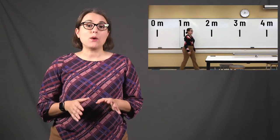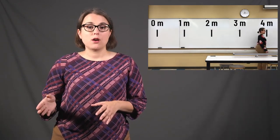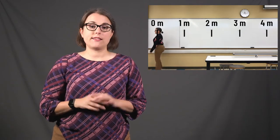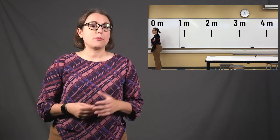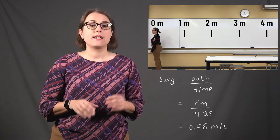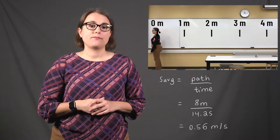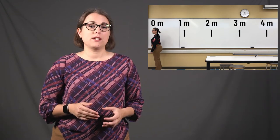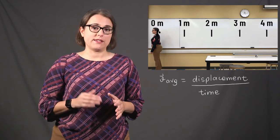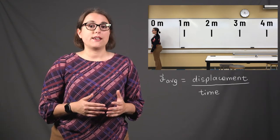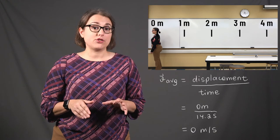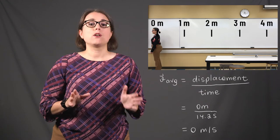Let's reconsider the example where I walk around the physics classroom, starting at the 0 meter mark, walking to the 4 meter mark, and then back to the 0 meter mark. We calculated the path to be 8 meters and the displacement to be 0 meters. The average speed is 8 meters divided by 14.2 seconds, which is 0.56 meters per second. Because I walked at a constant pace the entire time, my instantaneous speed equals my average speed. The average velocity is displacement divided by time, giving an average velocity of 0 meters per second. Regardless of how far I walk, if I end in the same position as I started, my displacement and average velocity will both be zero.